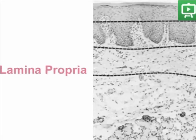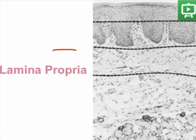The lamina propria is a part of the oral mucosa that is underneath the epithelium. For descriptive purposes, it is divided into a papillary superficial layer and a reticular deep layer.